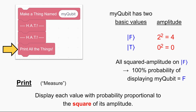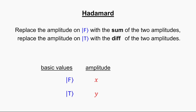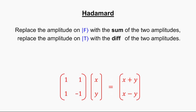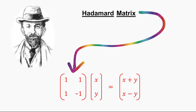As a side note, I want to mention how the Hadamard instruction got its name. If you have amplitudes x and y on false and true, then after Hadamarding the new amplitudes are x plus y on false and x minus y on true. If you've studied linear algebra, you might recognize that this transformation — which maps x and y to x plus y and x minus y — can be represented as a matrix multiplication. Specifically, stacking the old amplitudes into a vector and the new amplitudes into a vector, the Hadamard instruction corresponds to multiplication by the matrix with entries 1, 1, 1, and minus 1. This matrix was studied by Jacques Hadamard, who also proved the prime number theorem.